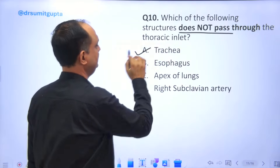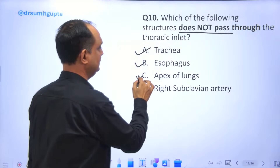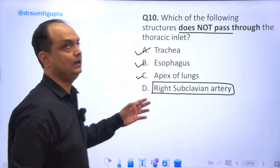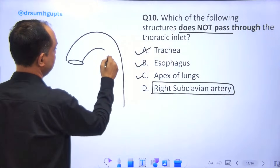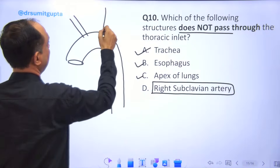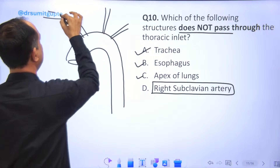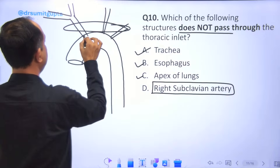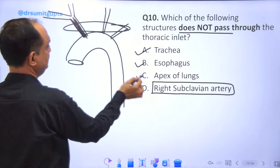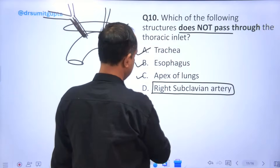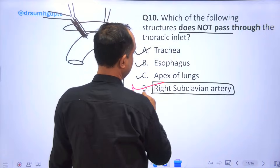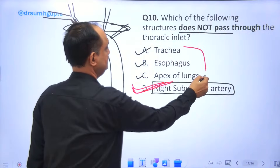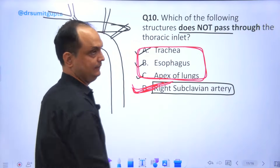Which of the following structures does not pass through the thoracic inlet? Trachea passes through, esophagus passes through, apex of the lungs are present on both sides. From the arch of the aorta there are three major arteries: brachiocephalic, left common carotid, and left subclavian. The brachiocephalic later divides into the right common carotid and right subclavian. Since the right subclavian arises after the brachiocephalic divides, it does not pass through the thoracic inlet. The answer is D — right subclavian artery.